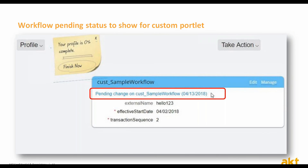Previously, when a user tried to create, edit, or delete a record on a custom portlet with a workflow attached to it, no validation messages were displayed regarding pending records. This inability to show if a workflow was pending wasn't very useful. Now, a link is displayed on the custom portlet with the pending record and the effective date. When users click the link, they will be able to view the record and its status. This ensures parity with Employee Central behavior, which for many customers is a welcome update.